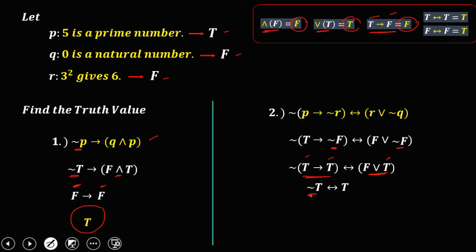And not true is false. For biconditional, if the values are the same, the truth value is true. Since this one is different — true and false — therefore the truth value for this compound expression is false.